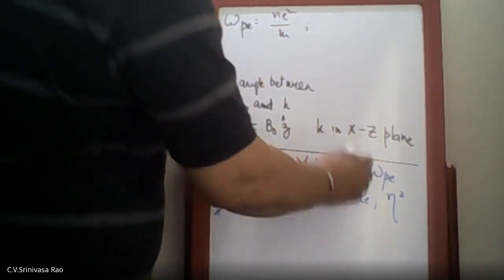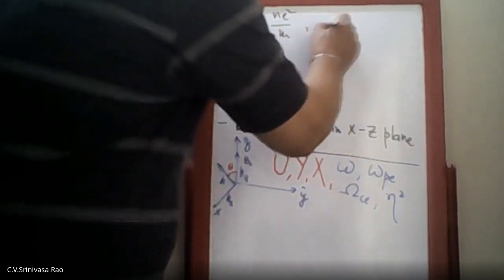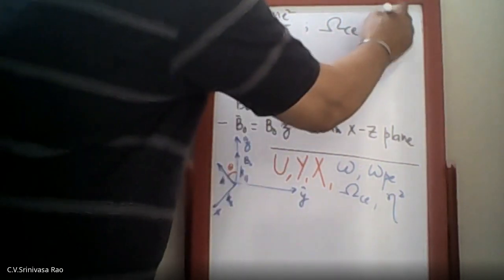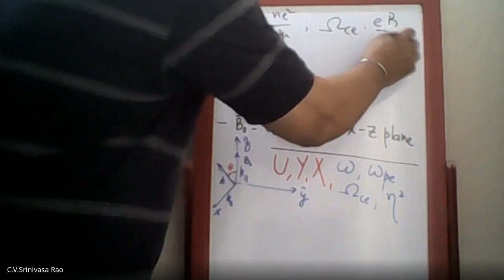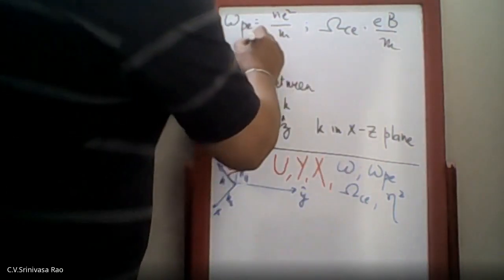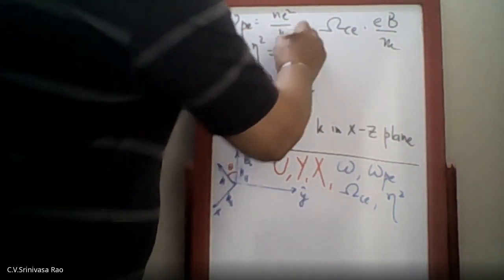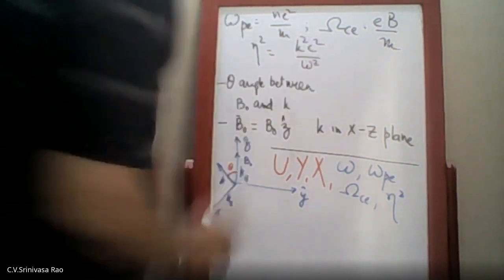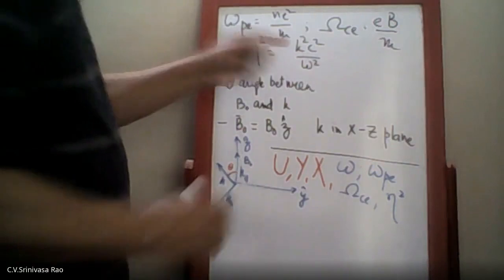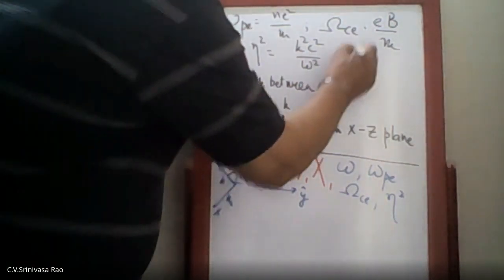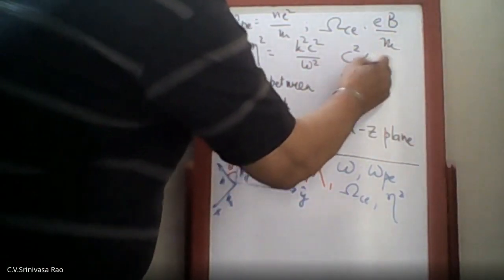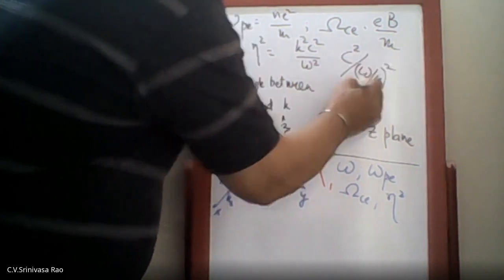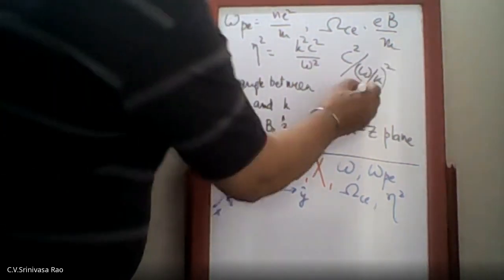The cyclotron frequency is basically E_b divided by A. The E term is k² c² divided by omega, which means it is c² over omega times k. This is the phase velocity.